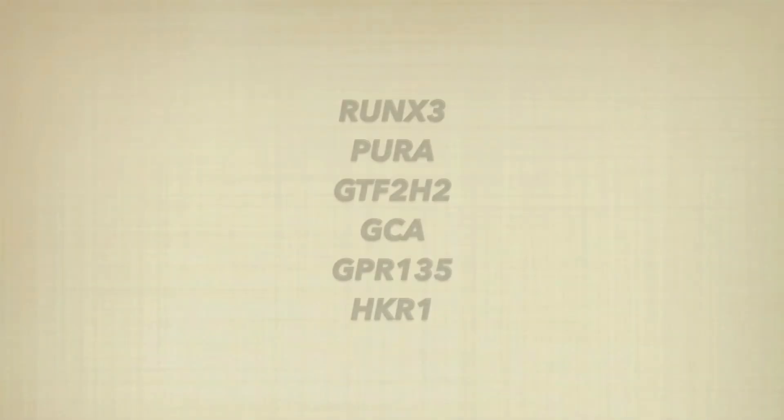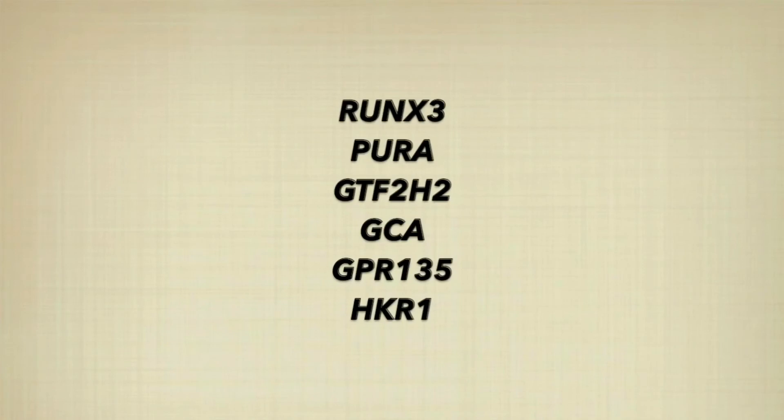There have been a number of smoking-associated differentially methylated genes in the placenta that have been identified, mostly through epigenome-wide association studies, also called EWAS. These include RUNX3, Pura, GTF2H2, GCA, GPR135, and HKR1.